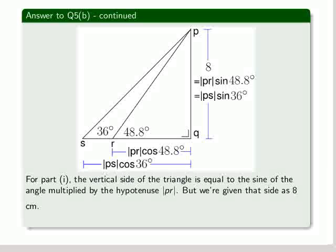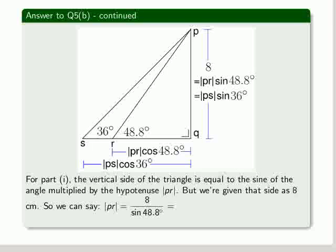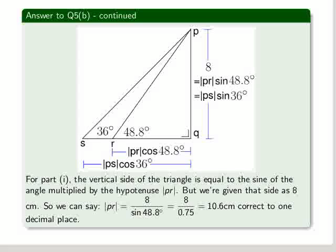But we're given that side already as 8 centimetres. So we can say that PR then is 8 centimetres divided by the sine of 48.8 degrees, which is 8 over 0.75, which is 10.6 centimetres correct to one decimal place.